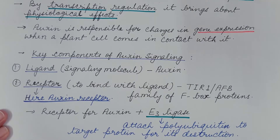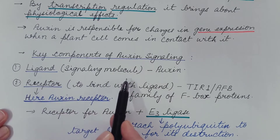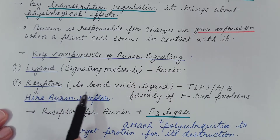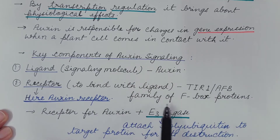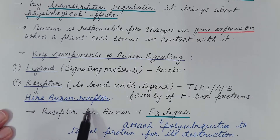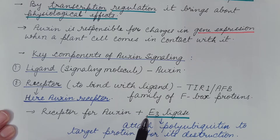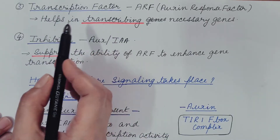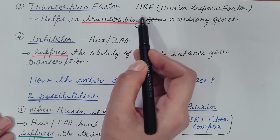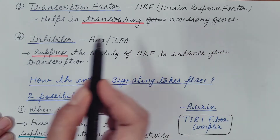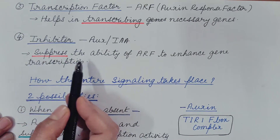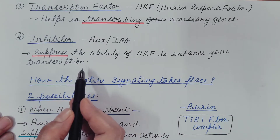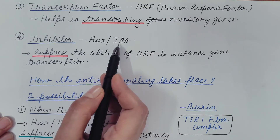Any signaling pathway has certain key components, and auxin signaling is no different. First is the ligand — the signaling molecule, which here is auxin. Second is the receptor, which binds with the ligand — here it is the TIR1/AFB family of F-box proteins, which acts as the auxin receptor and also has E3 ligase activity, attaching polyubiquitin to target proteins for destruction. Third is the transcription factor ARF (Auxin Response Factor). Fourth is the inhibitor AUX/IAA, which suppresses the ability of ARF to enhance gene expression.